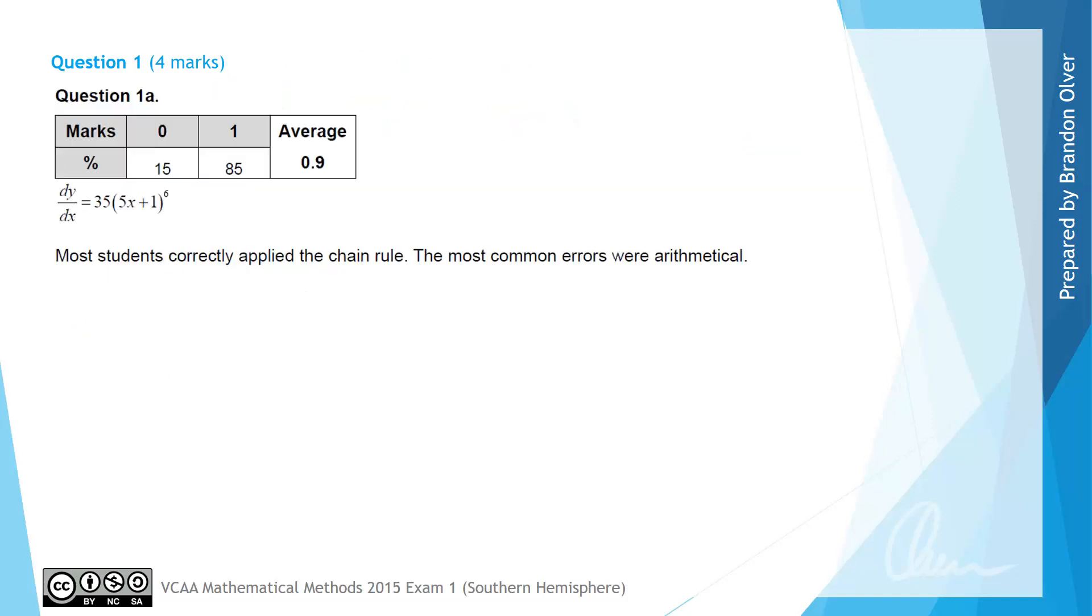From the examiner's report we can see that most students correctly applied the chain rule, and 85% of students got full marks for that question. The most common errors that were made were based around arithmetic of students.